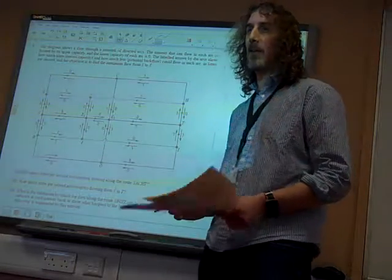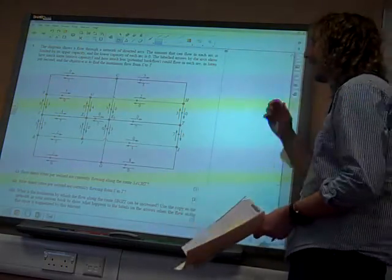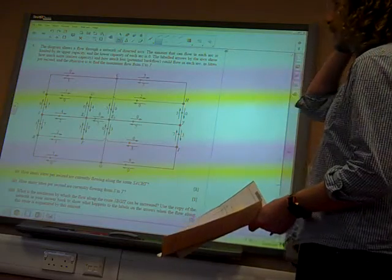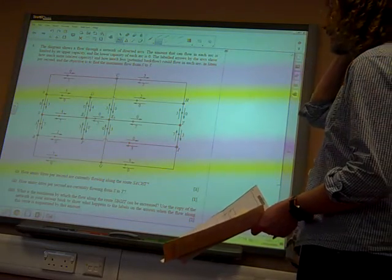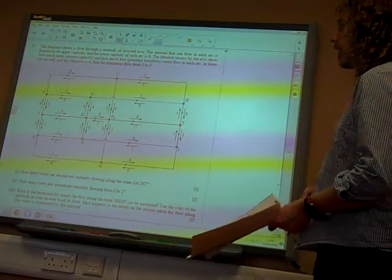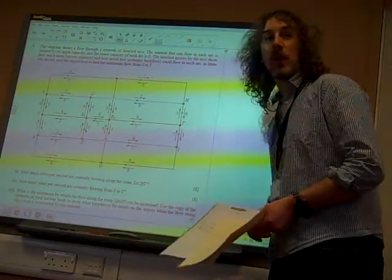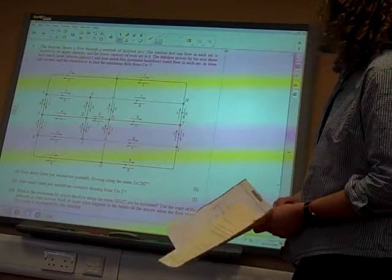It is recording now, right. So, question five. The diagram shows a flow through a network of directed arcs. The amount that can flow in each arc is limited by its upper capacity. The lower capacity of each arc is zero.